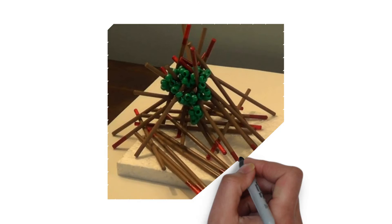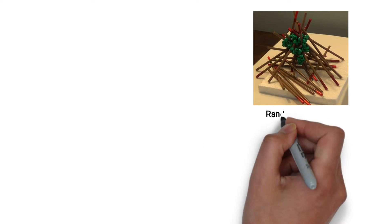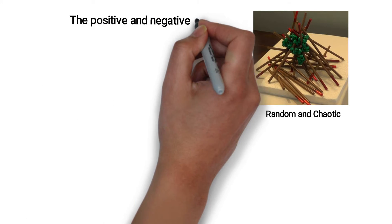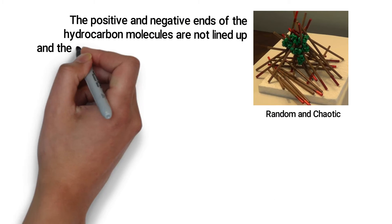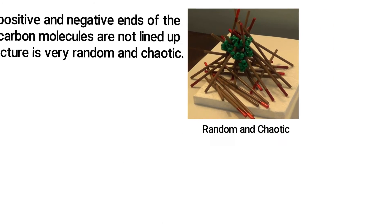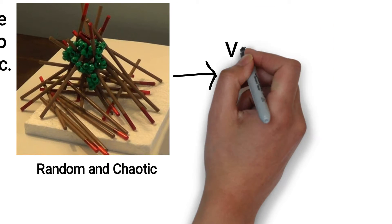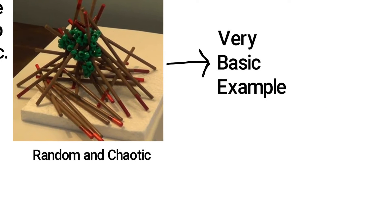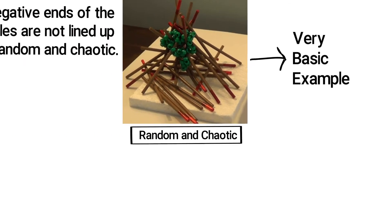Hydrocarbons are very chaotic, messy structures that are not organized in a way that can burn efficiently. Notice that the positive and negative ends of the hydrocarbon molecules are not lined up, and the structure is very random and chaotic. Hydrocarbons can have many, many branches off one hydrocarbon molecule, making the structure even much more chaotic.